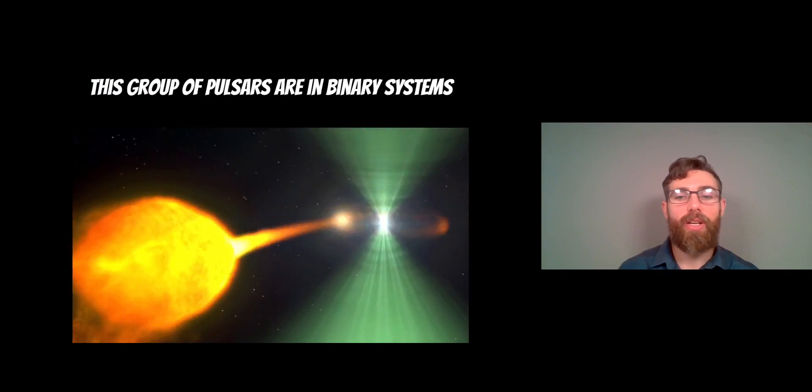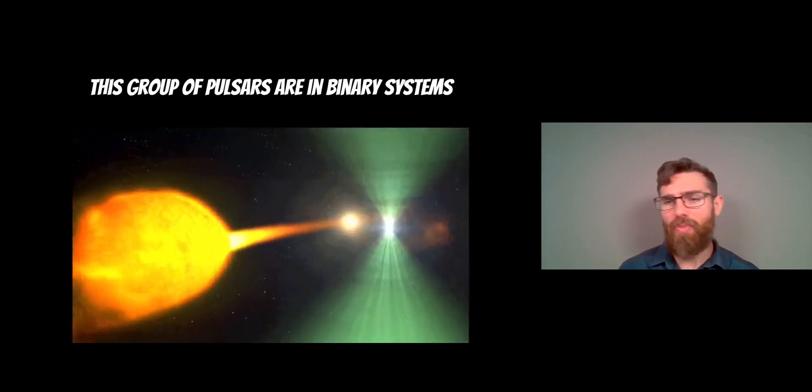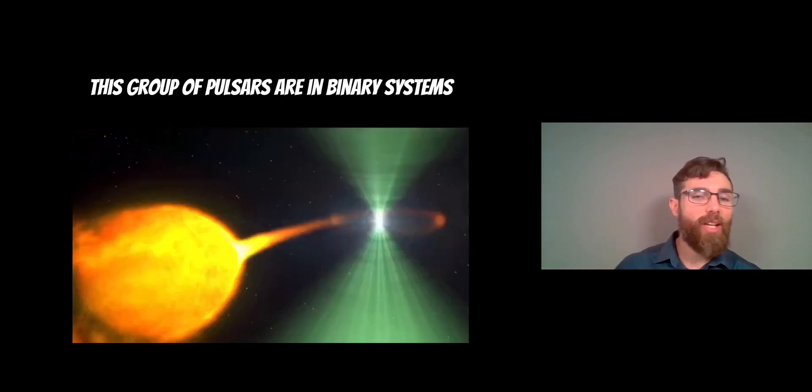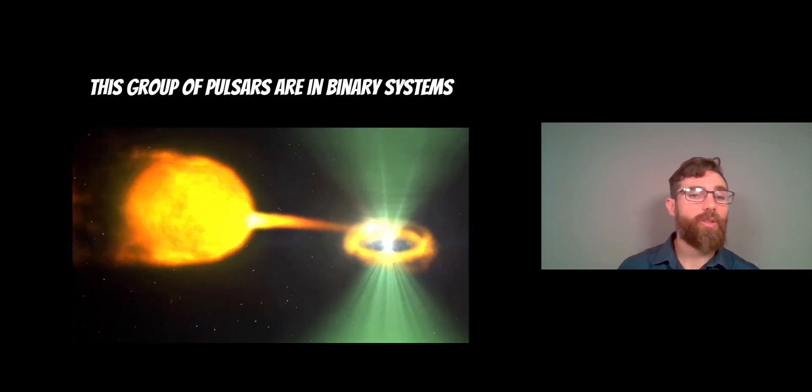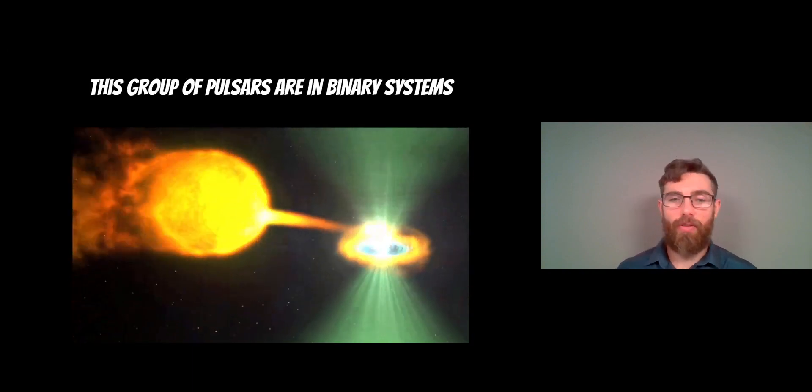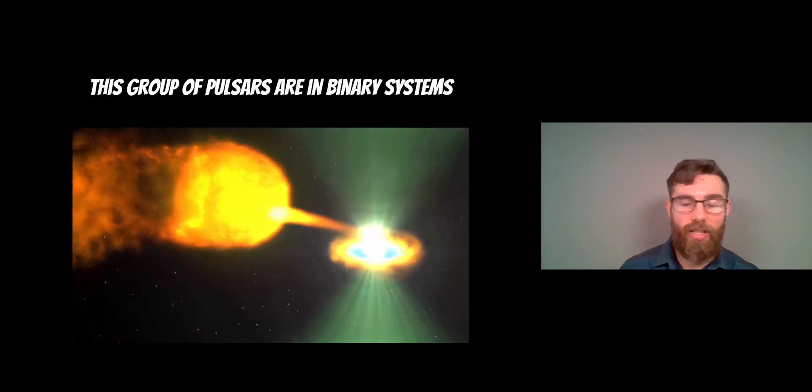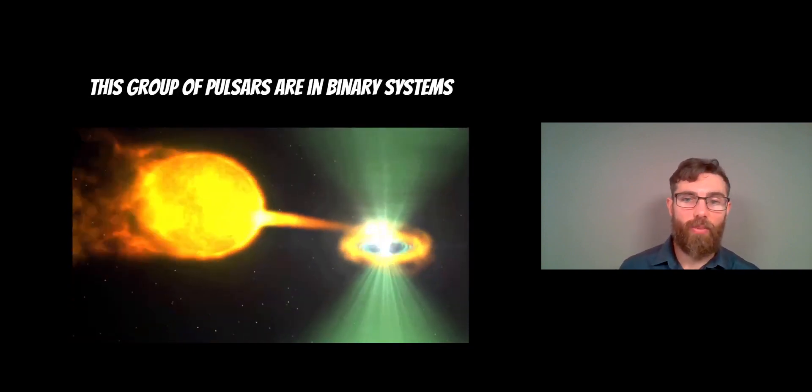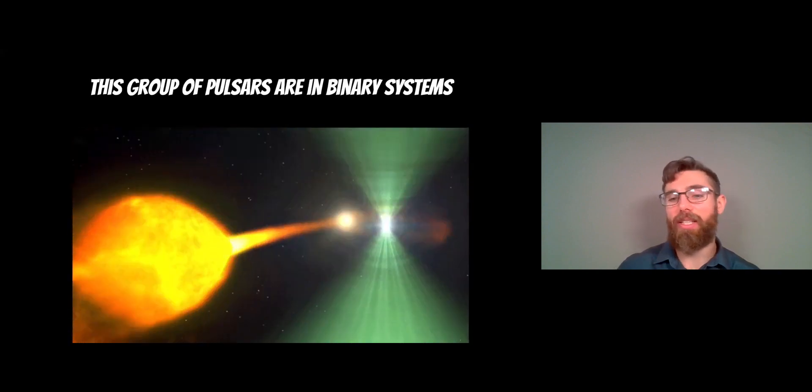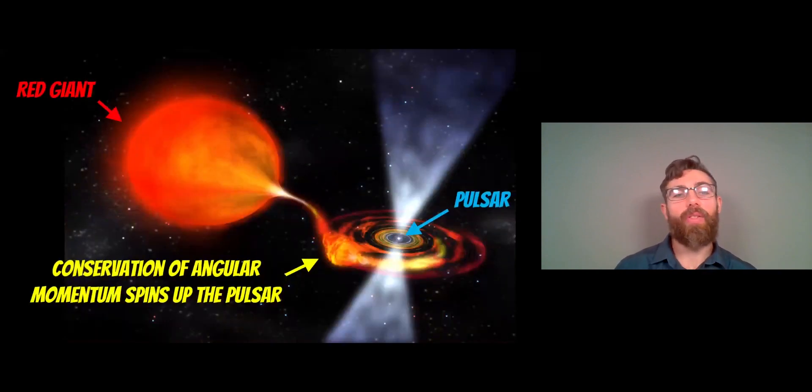These are confirmed pulsars in a binary system with another star. What's happening here is it's likely a giant star that has probably gone red giant phase, and the pulsar is pulling material off that. It then creates a disc around it called an accretion disc which falls onto the pulsar, so the pulsar is growing in size by pulling material off the other star.